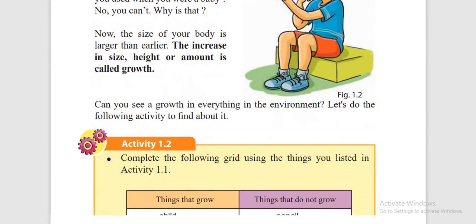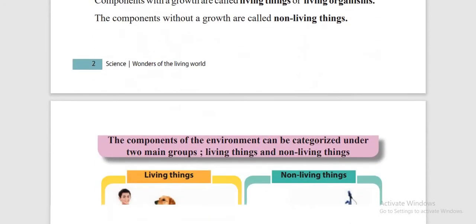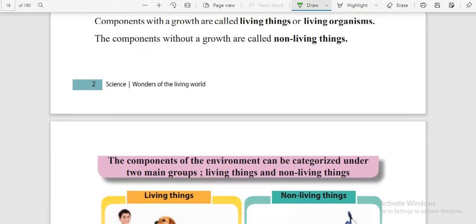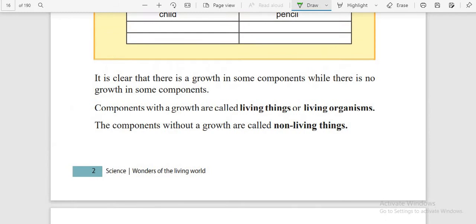According to these characteristics, let's see them in order: growth, nutrition, movement, respiration, reproduction, excretion and sensitivity. These are the main characteristics of living things.